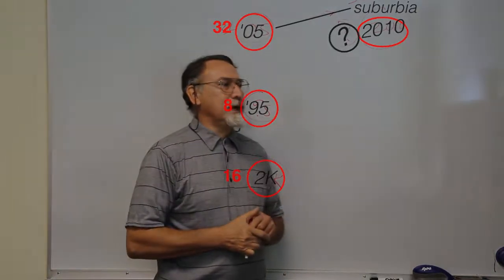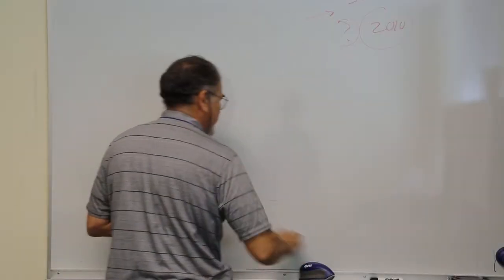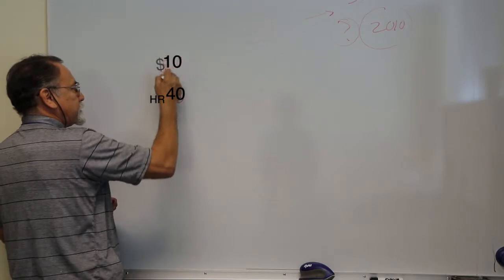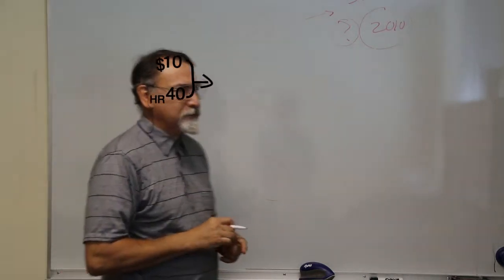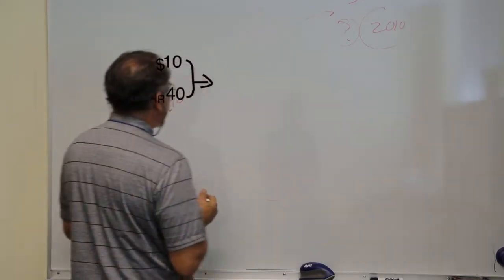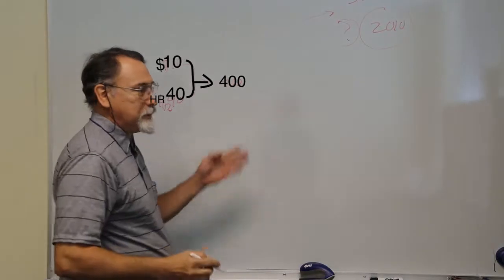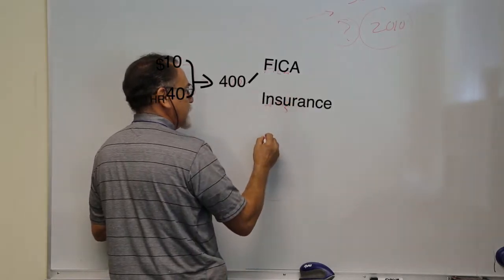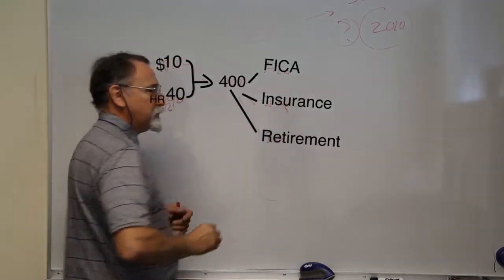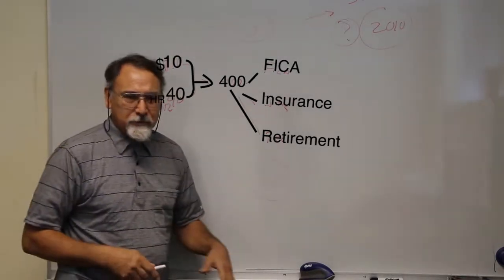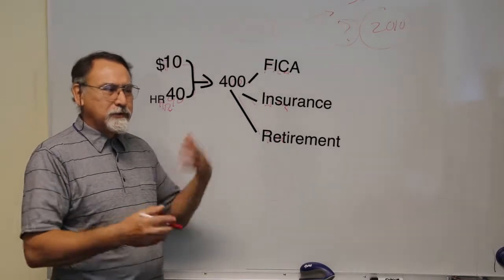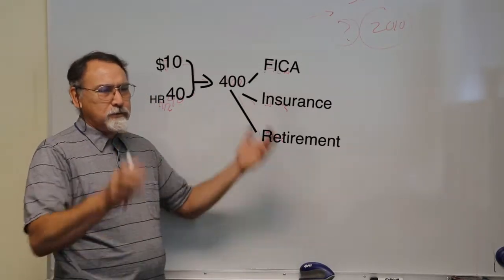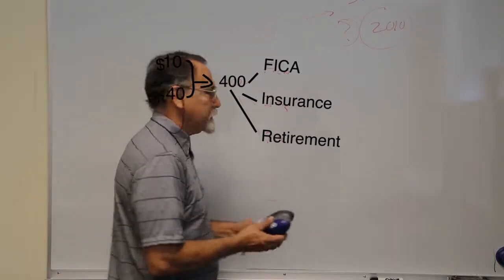Another thing we'll look at: say you're making $10 an hour and you work 40 hours a week. These two systems, as they are integrated, you can see how you'd have $400 here. From that $400, you subtract FICA, subtract insurance, and subtract retirement. You can see you need a system that manages all this — it's more than an accounting system, because you have to consider a prior event, a current event, and a future event. You've got to warehouse all the data, and that's what we're going to look at.